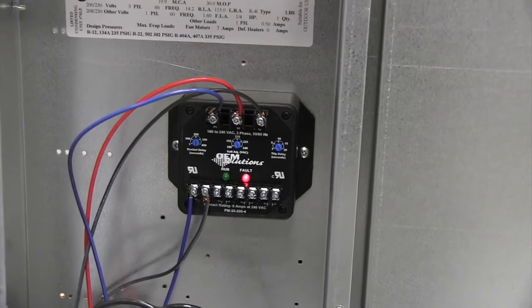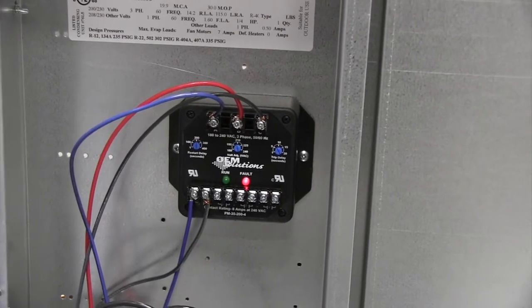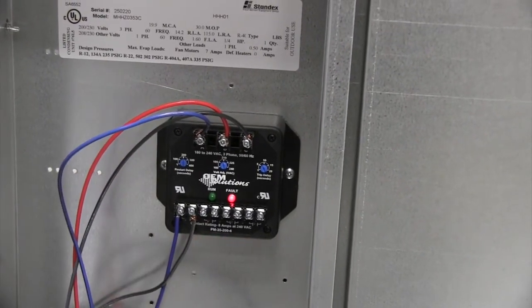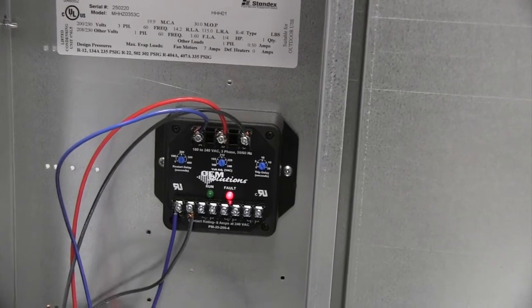We've applied power, so now we have 210 volt three-phase on the phase monitor, and we have a fault light being indicated, which would be indicative of a problem with our compressor.